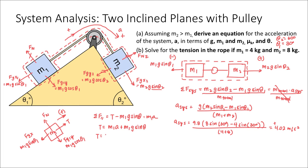So tension is equal to 4 kilograms times that 4.02 meters per second squared, plus 4 times 9.8 times sine of 30 degrees, theta 1 here. It would be about 36 newtons of force. And there you have it.